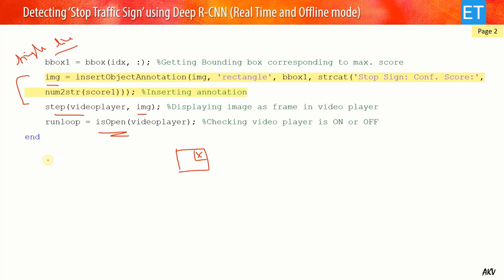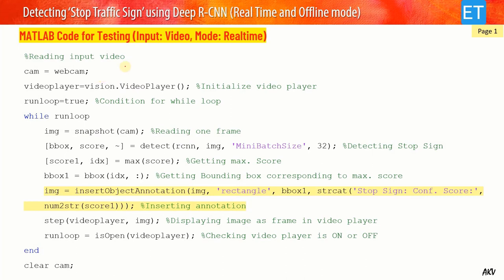For the real-time implementation, I use the laptop's webcam. The code is the same as the video case, except instead of reading frames from a file, I use a webcam object and the 'snapshot' function to capture live frames. Each captured frame is passed to the 'detect' function for object detection, and the rest of the code remains the same.